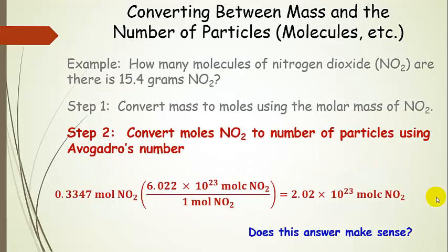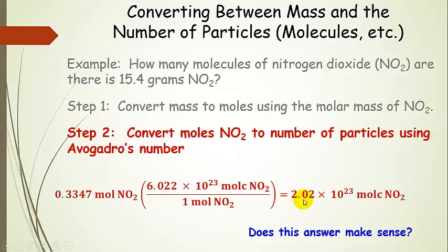Now we're in moles, so we're going to convert moles to number of particles. We just use Avogadro's number for that. We take our moles of nitrogen dioxide and use the conversion factor: one mole of nitrogen dioxide equals 6.022 times 10 to the 23 molecules of nitrogen dioxide. Multiplying these together, we end up with 2.02 times 10 to the 23rd molecules of nitrogen dioxide. Think to yourself: does this make sense? We have about a third of a mole; there are 6.022×10²³ in a whole mole, and we're around 2.02×10²³. That definitely makes sense.